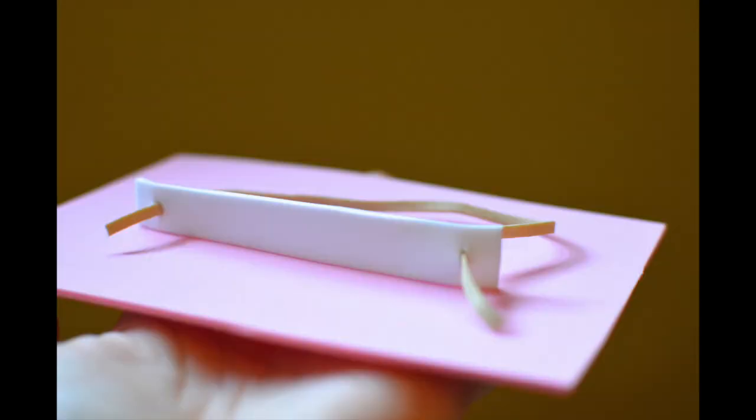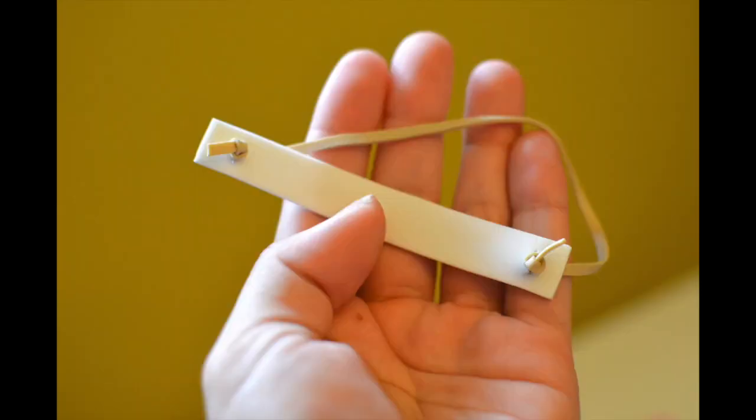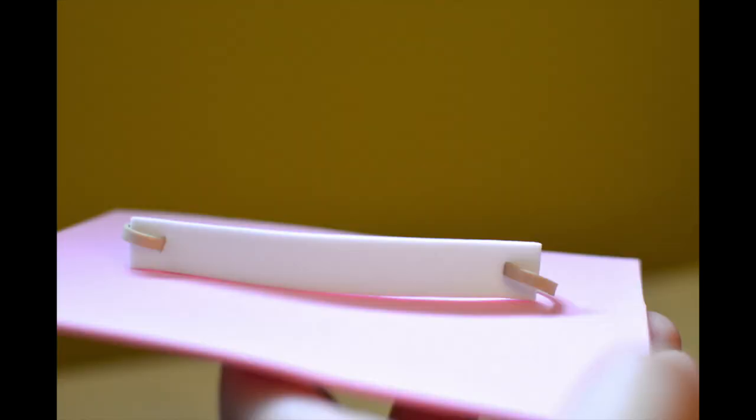You're going to slide the rubber band through and tie it into knots. That's actually going to be the bottom part so the rubber band's actually going to go over the top like that so you don't see the knots.